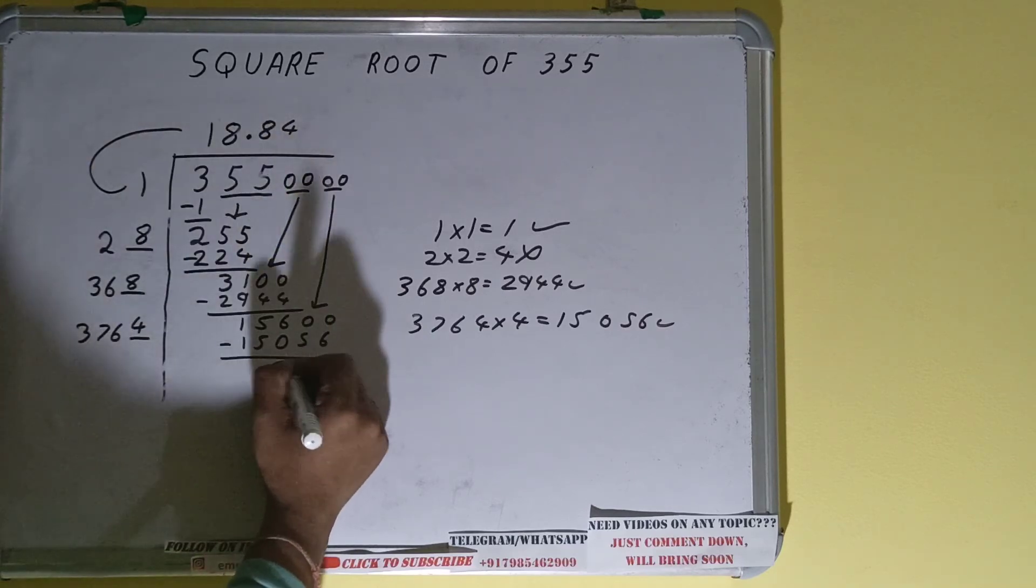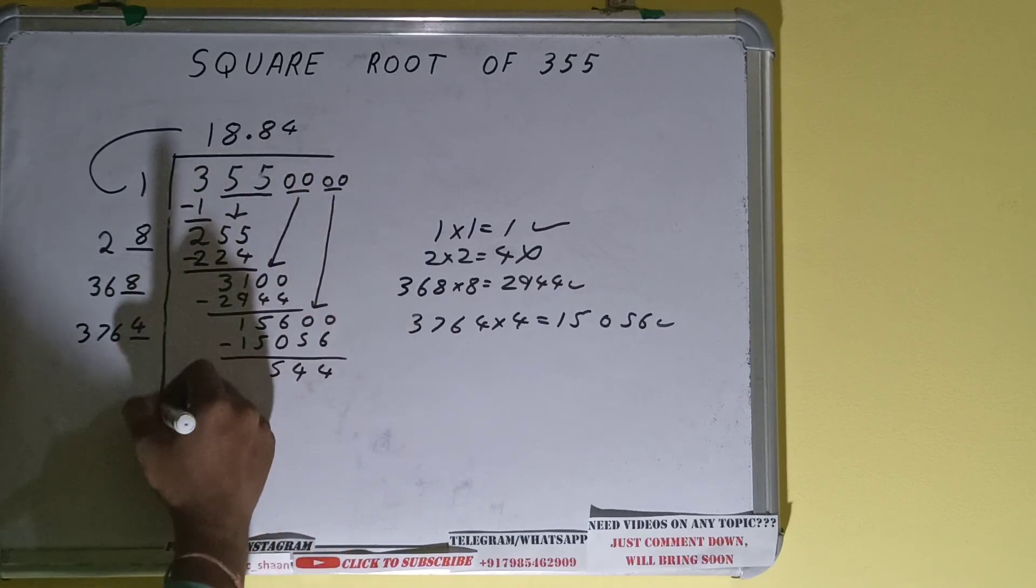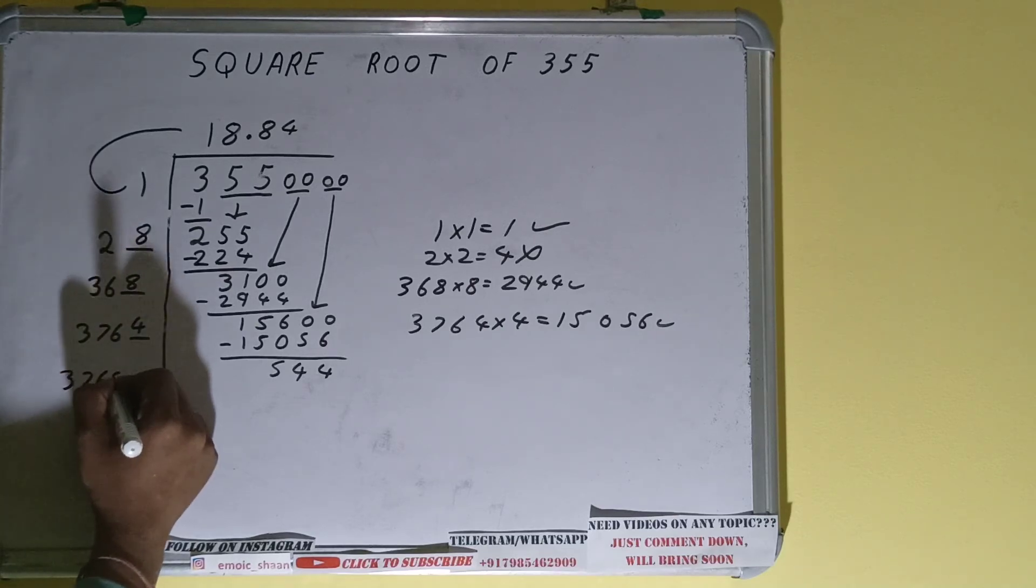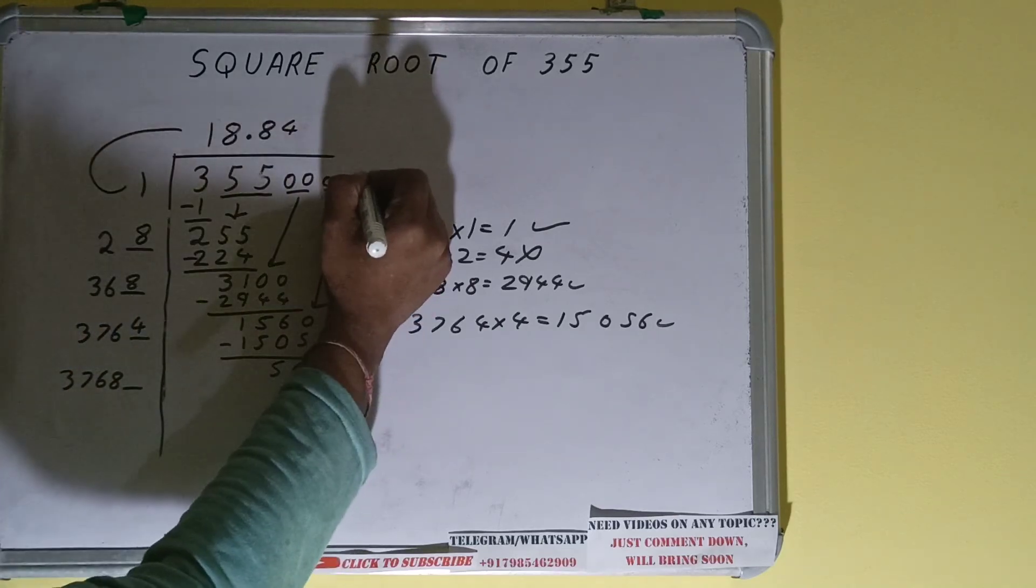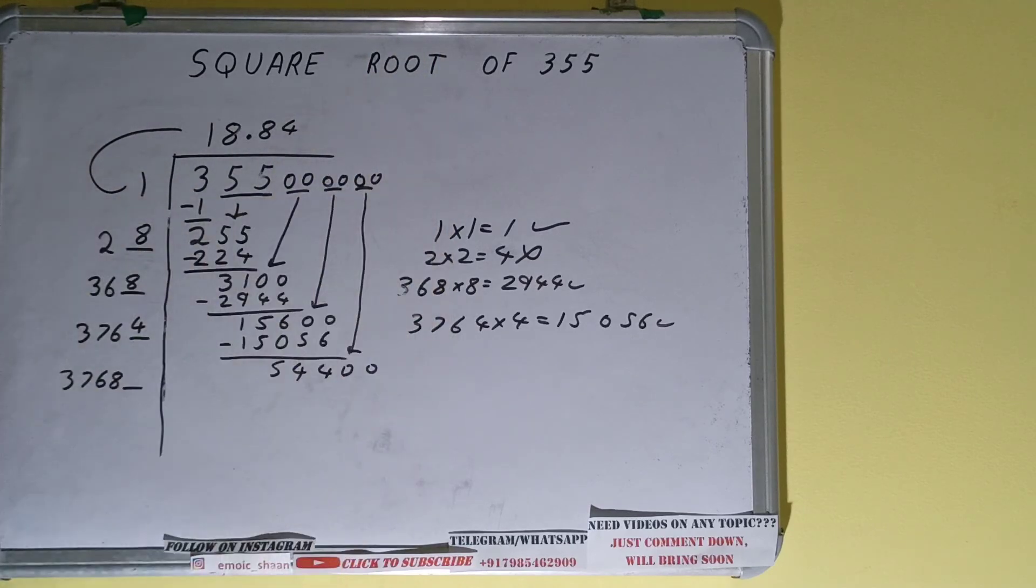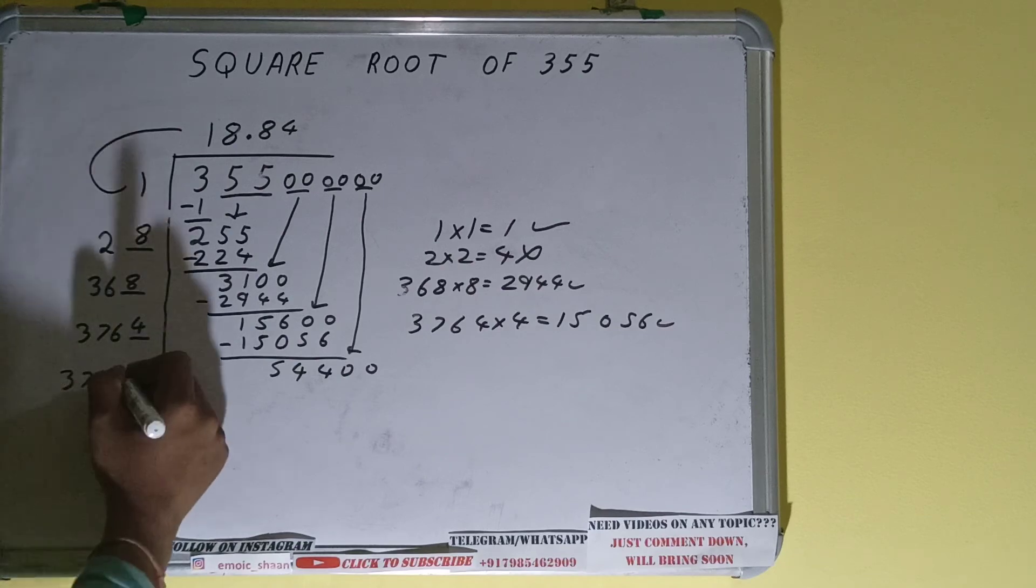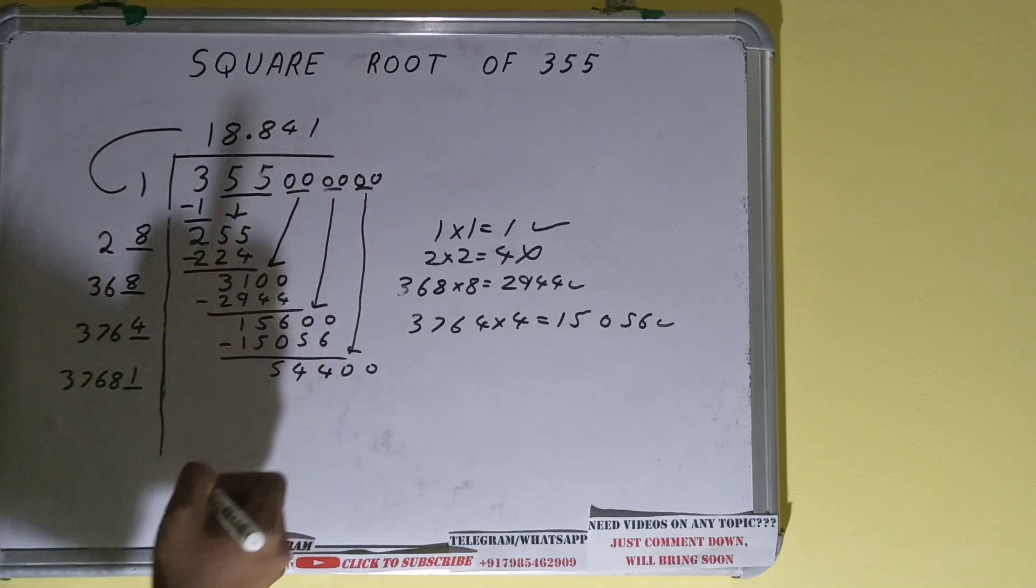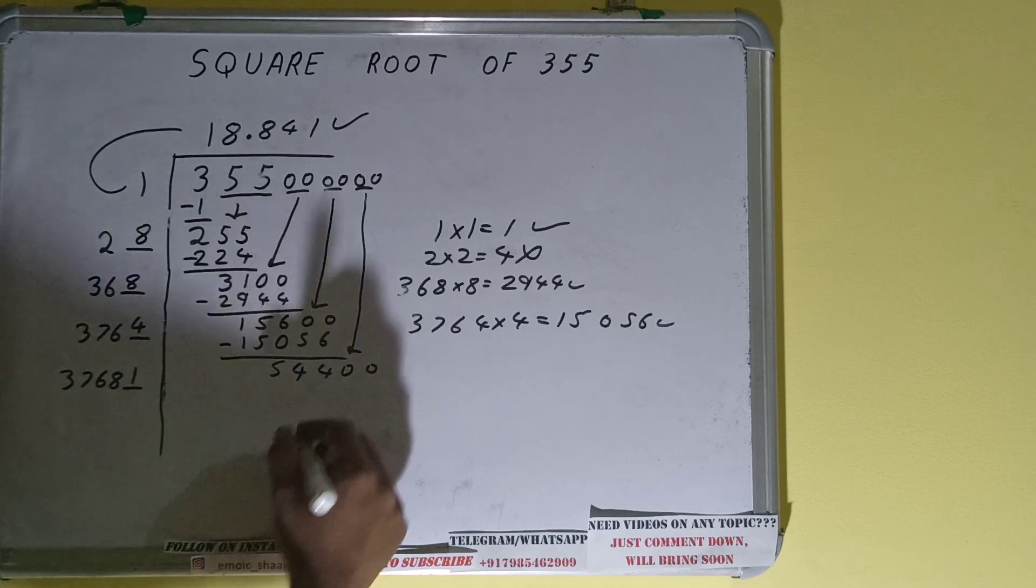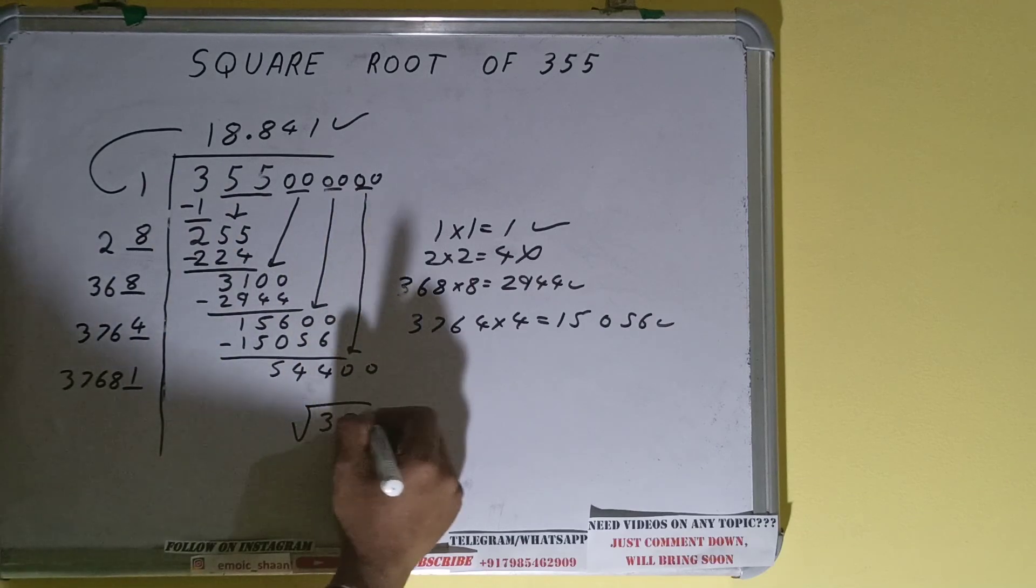Now 3764 into 4 we did, so add both. So 3764 plus 4 will be 3768 and one digit extra. This number we need to make it big, so bring the next pair of zeros down and it will become as 54400. Now one time will work but we don't need to calculate because we got the answer correct up to three decimal places. So square root of 355 will be 18.841 and that will be the answer.